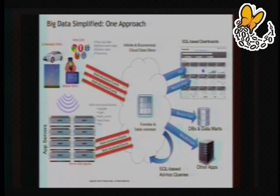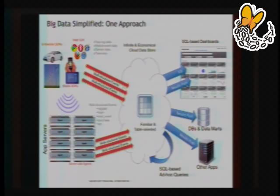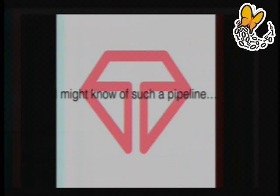Once you have the data in this kind of system, you're able to query it out using an abstraction like Hive or Presto, which is running SQL — but what it's really doing is running a MapReduce job on the data in the background. Incidentally, I might know of such a pipeline, but I'm not supposed to advertise here. If anyone wants to ask me about how such a cloud pipeline works or is set up, I'm happy to talk more.